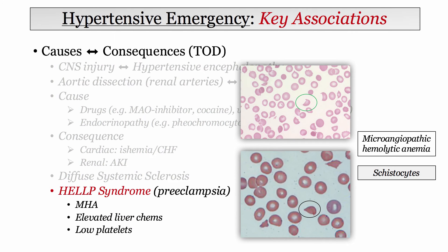The last key association is HELLP syndrome. While HELLP syndrome isn't terribly common, it may be seen in 10–15% of patients with preeclampsia. It is characterized by the combination of microangiopathic hemolytic anemia, elevated liver chemistries, and low platelets. The microangiopathic hemolytic anemia is expressed by the presence of schistocytes — and that is the key finding. Both malignant hypertension and HELLP syndrome are additional conditions associated with schistocytes. As with TTP, think about activated platelets at sites of endothelial injury interacting with fibrinogen and shearing RBCs.